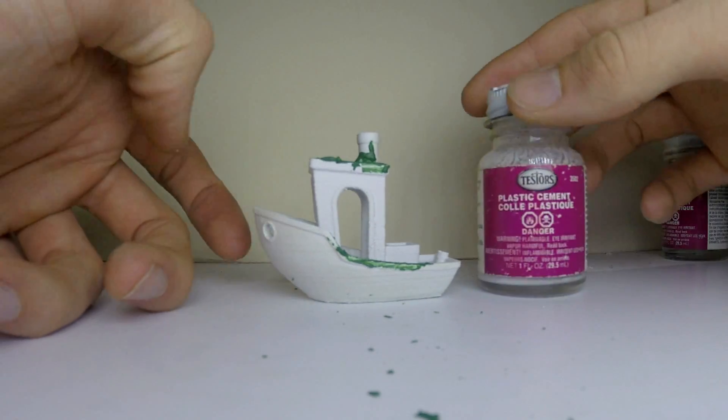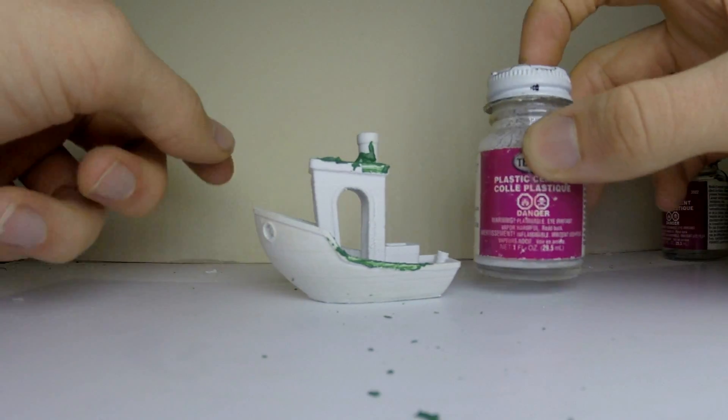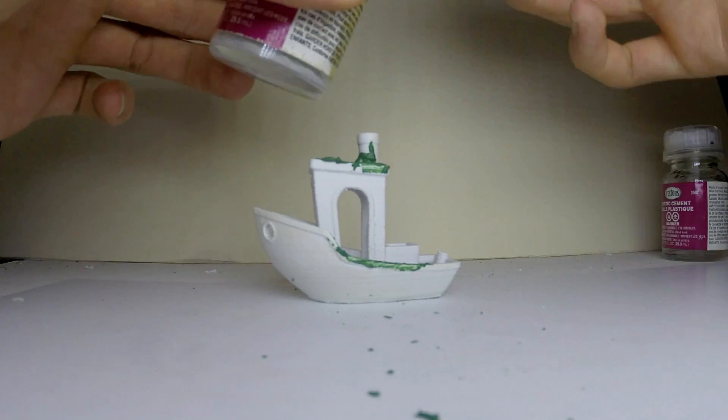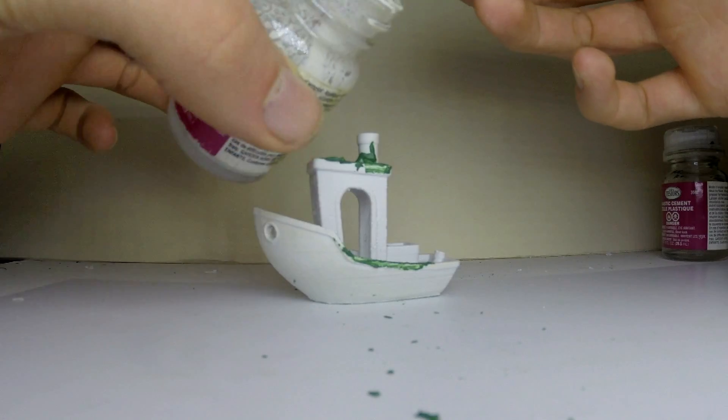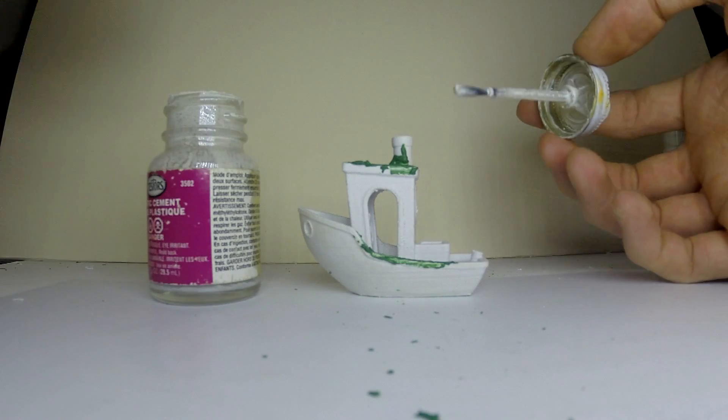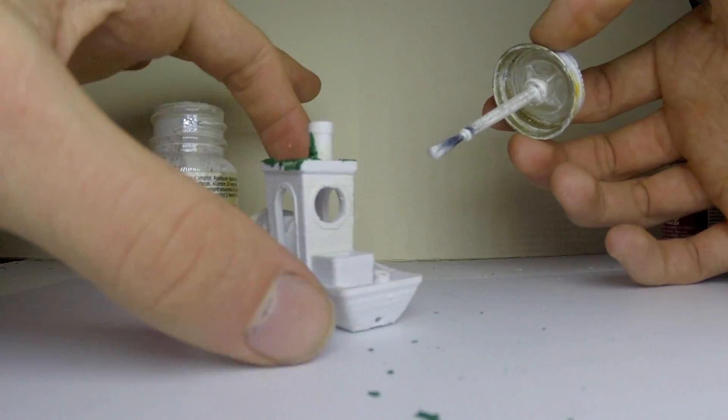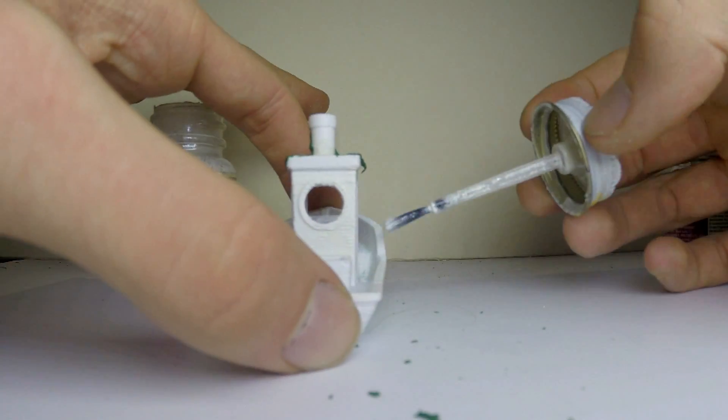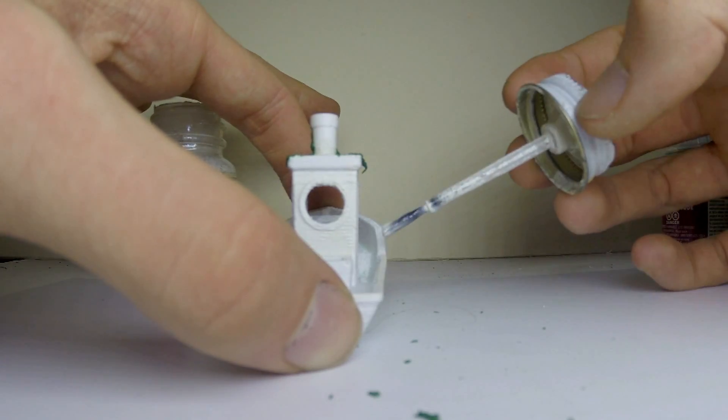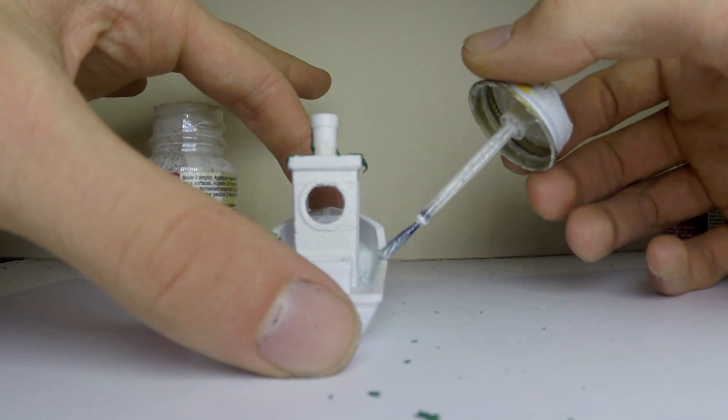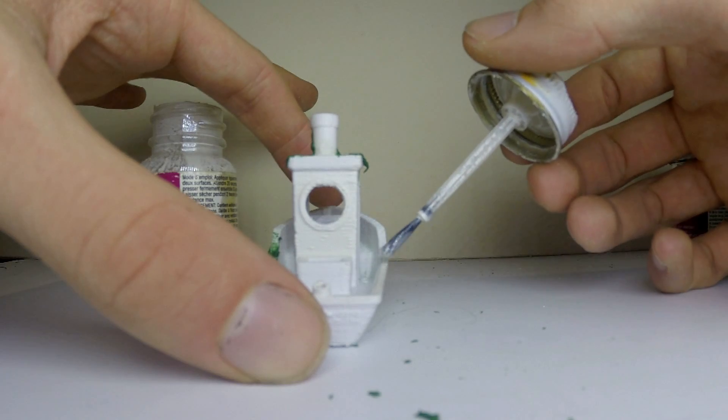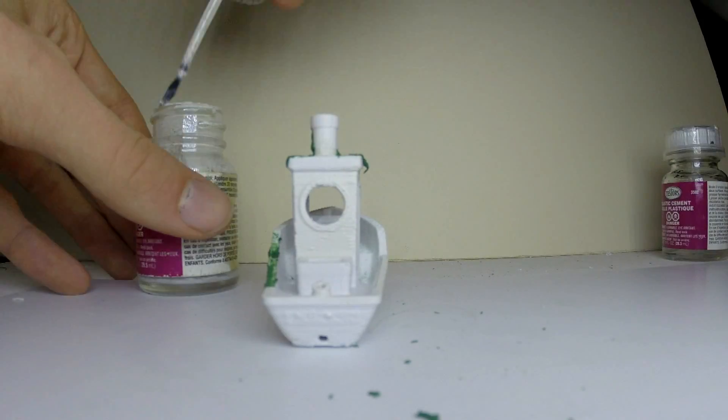A little bit earlier I mentioned that you can mix the putty directly into the glue container. The advantage to this is you can get a very thinned-down slurry, and if you want to more precisely apply it in certain areas where you don't need a ton of putty or it's somewhat hard to apply otherwise, you can literally just brush it on there and you're good to go.